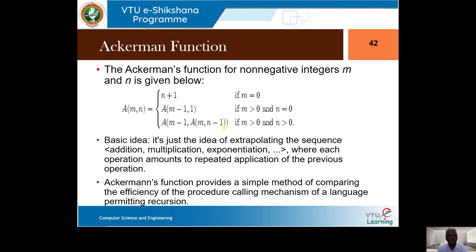This is something different from previous examples. We had double recursion where it's an expression — for example, Fibonacci: fib(n-1) + fib(n-2). Those are two independent recursive calls. But here it's not like that — within the recursive call, the first parameter is m-1 (a normal value), but the second parameter is itself another recursive call.